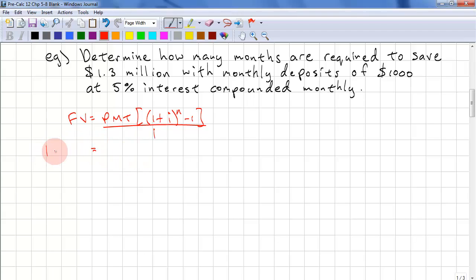We have 1.3 million, so that's five zeros. We have 1,000 and we have 1 plus 0.05 divided by 12 to the power of n minus 1. This is 0.05 divided by 12.